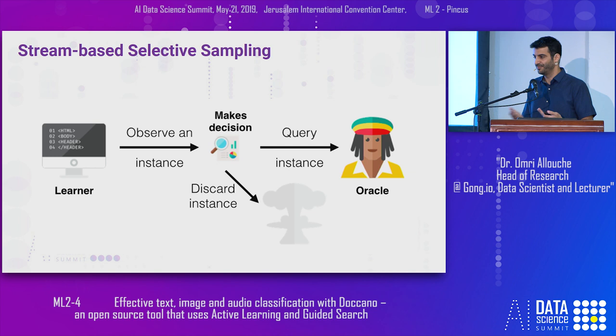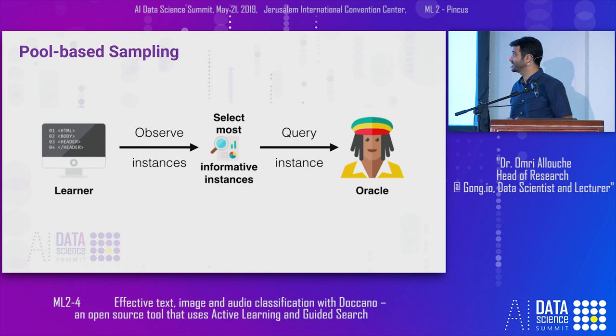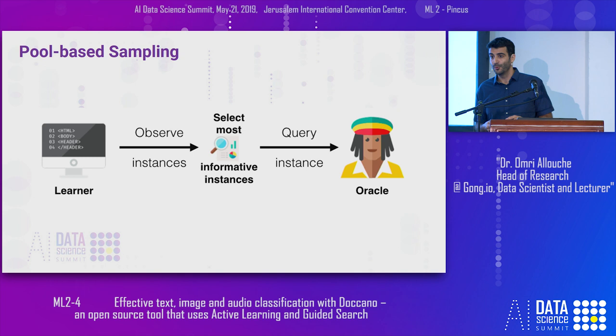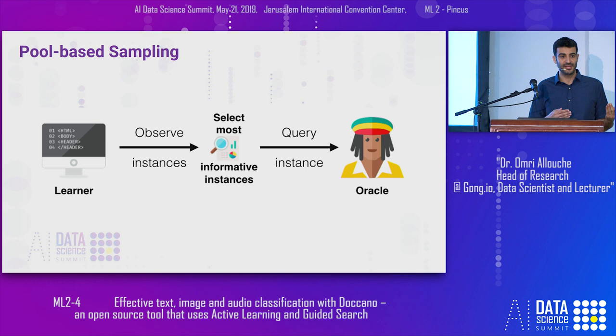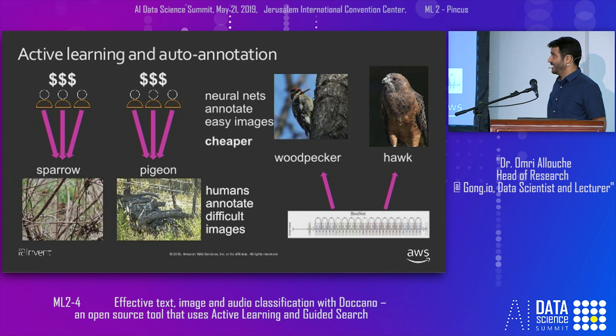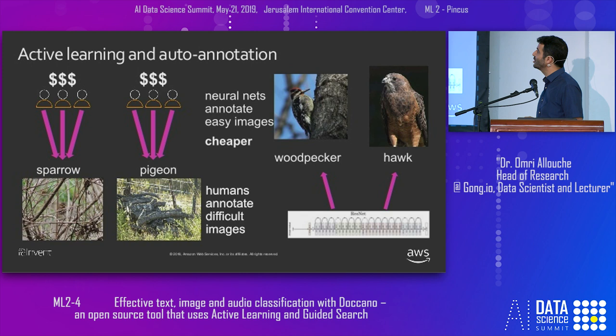What is most useful for us at Gong and many other applications is pool-based sampling, where we have a big pool of unlabeled data and from this pool we select what we want to get labels for. As AWS also presents, we can ask human labelers — who are pretty costly — to classify images belonging to a certain species of birds, and let the neural network annotate easy images, which is much cheaper at large volume.